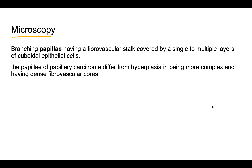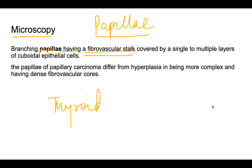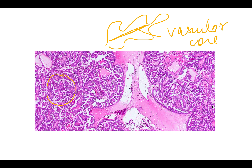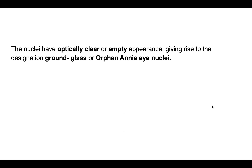In microscopy, the first point is the papillae. Remember, nuclear features are diagnostic. The papillae should be branching and should have a fibrovascular core. Other thyroid conditions like Graves' disease and multinodular goiter also show papillae, but the papillae of papillary carcinoma are more complex with a well-defined fibrovascular core inside.